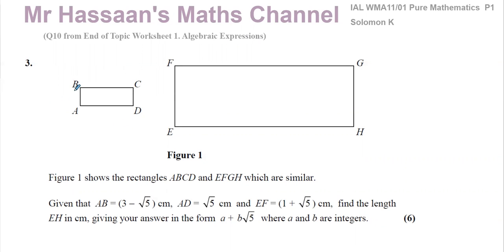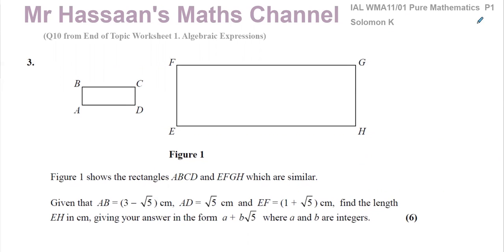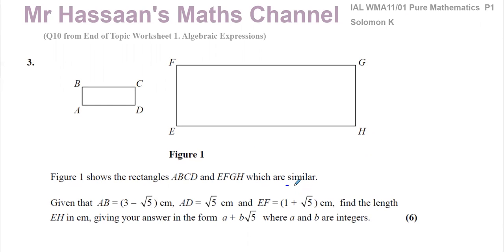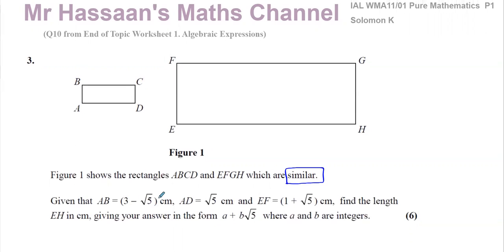It's a question that one of my students has asked me to answer. It says figure one shows the rectangles ABCD and EFGH which are similar. The word 'similar' is very important here — it will affect the whole question. Similar rectangles means that the ratio of the sides are the same, so the ratio of this side to this side is the same as the ratio of that side to that side.